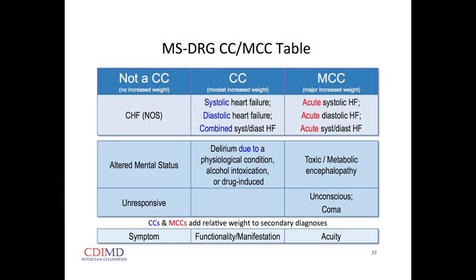Within the MS-DRG system there's a three-tiered assignment of severity of illness within a condition. There are MCCs — major comorbidities or complications — CCs, which are not major comorbidities or complications, and a third tier that is neither. We get no credit for things that are in that bottom tier.